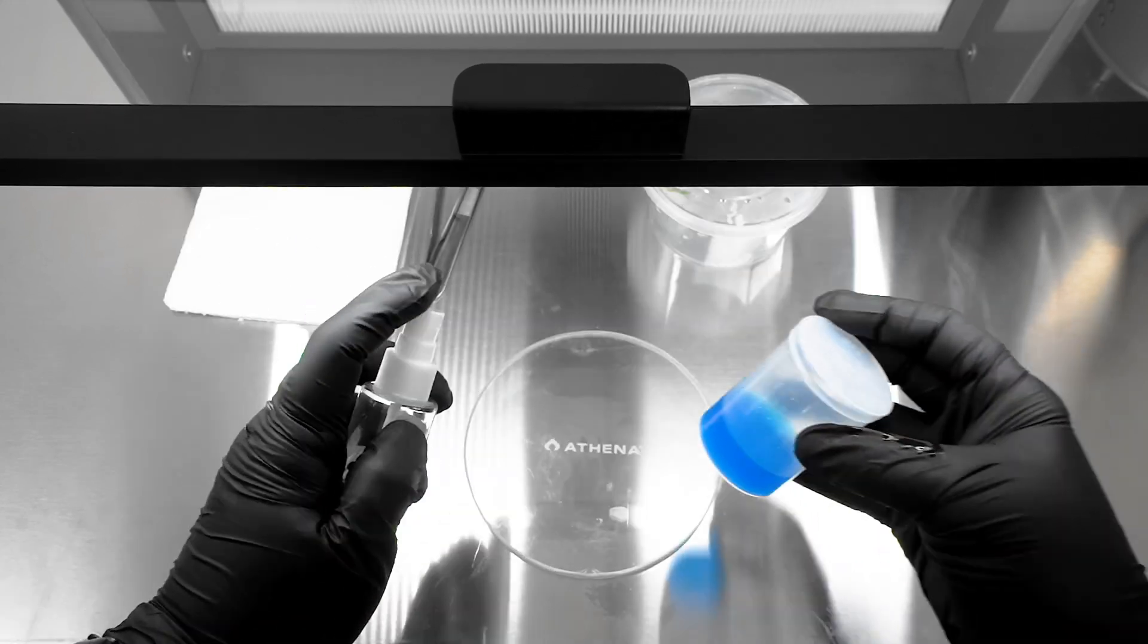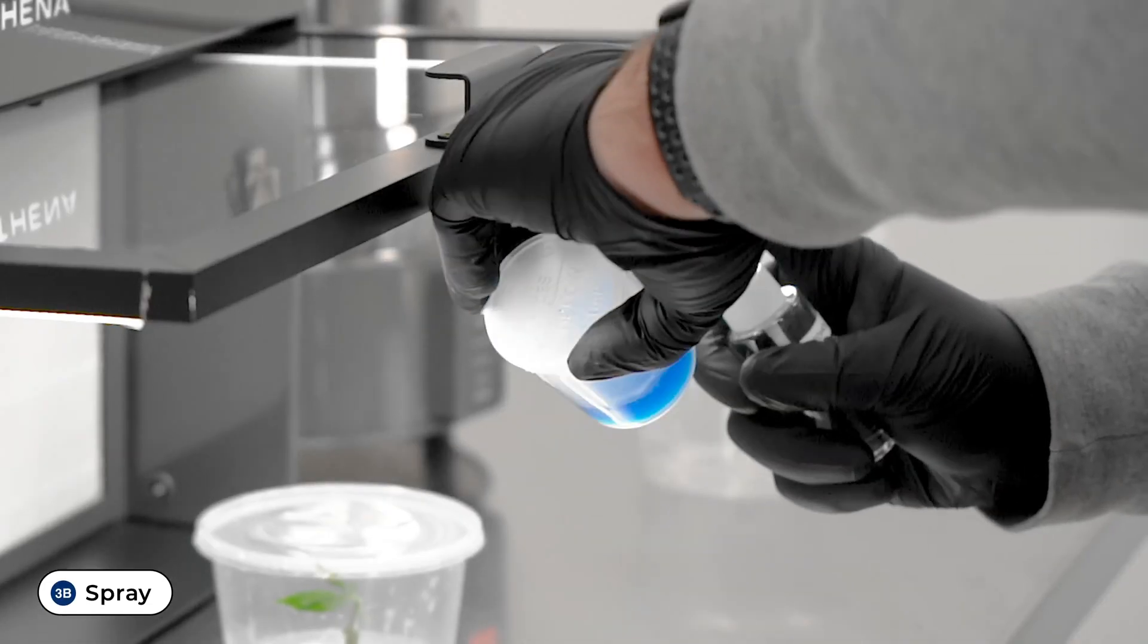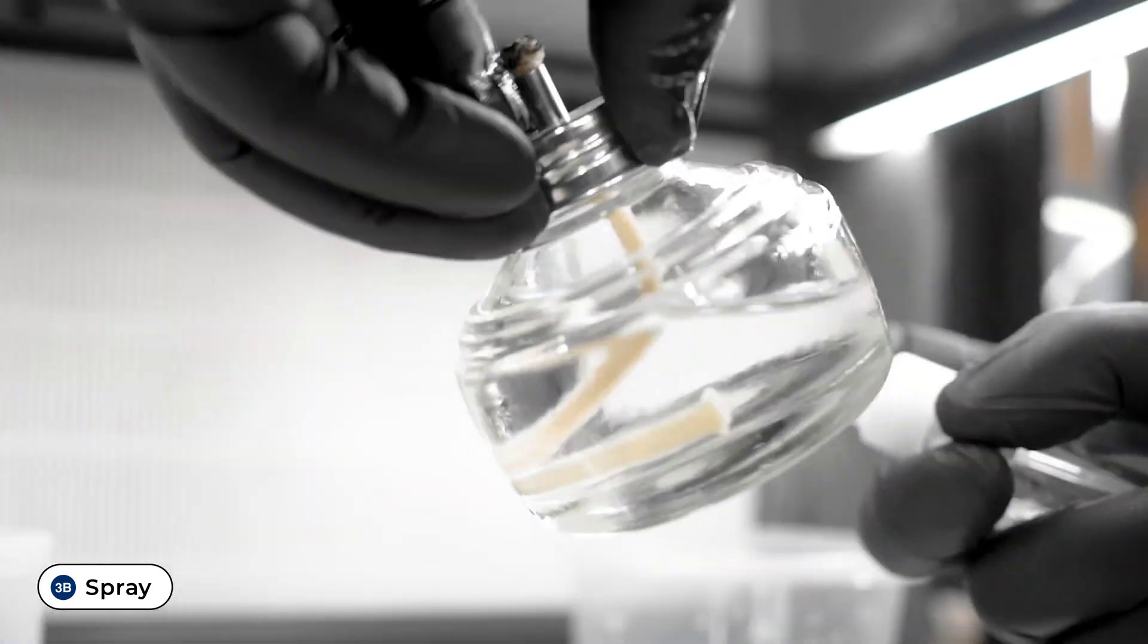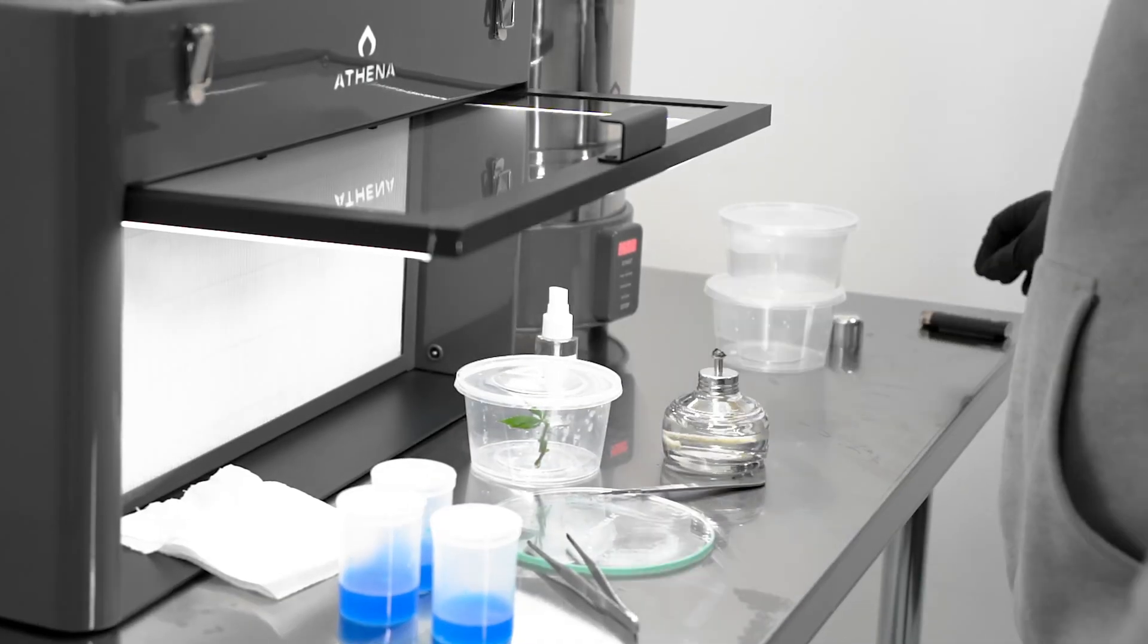Re-clean and sterilize the work zone with alcohol wipes. Spray the culture vessels and alcohol burner with alcohol to surface sterilize before placing in the work zone.